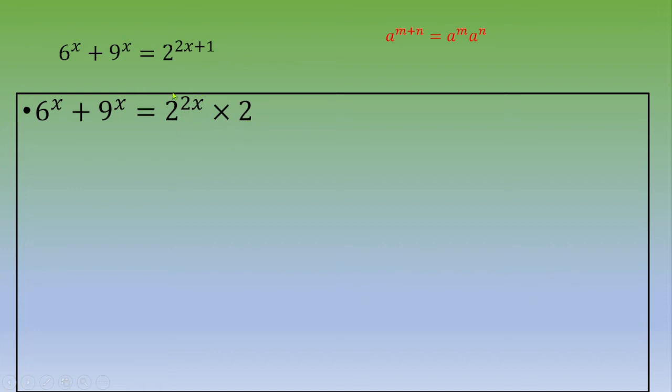Next step is to modify once again this quantity and we're going to apply another power rule: a power m times n equals a power m power n. So at the end we get 6 power x plus 9 power x equals